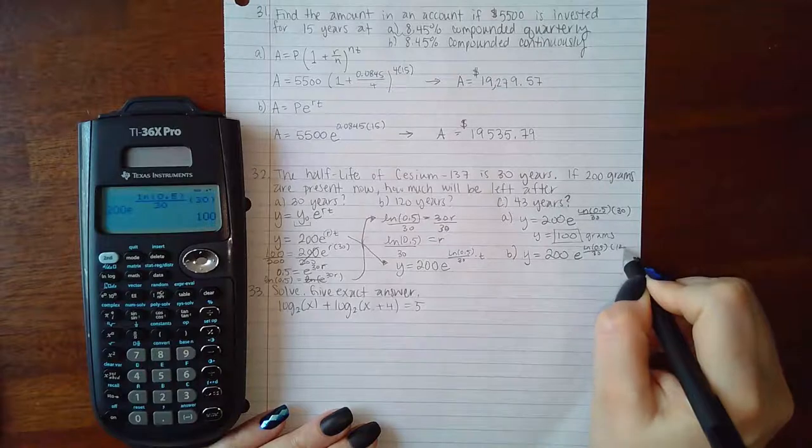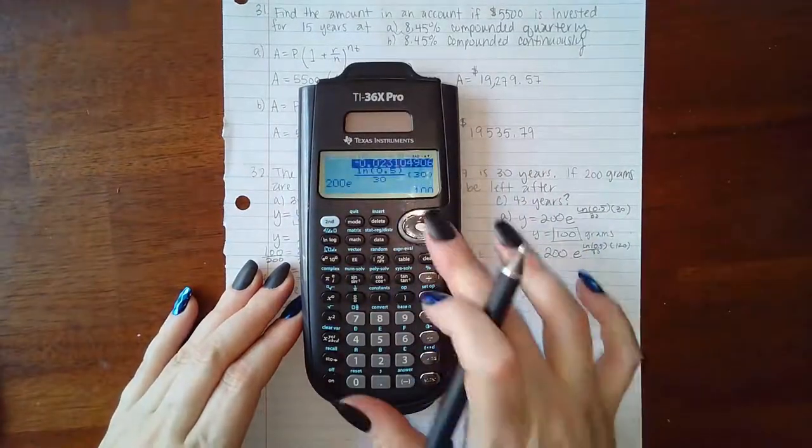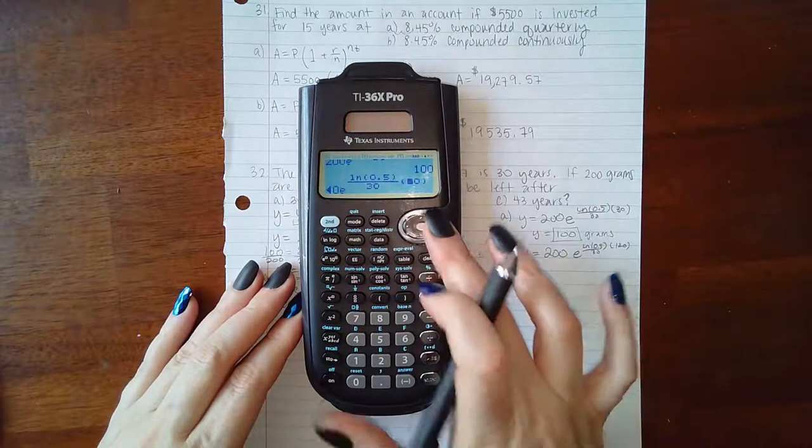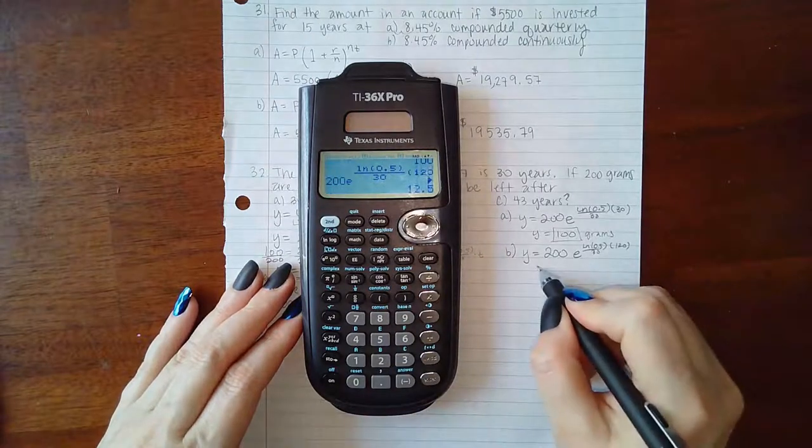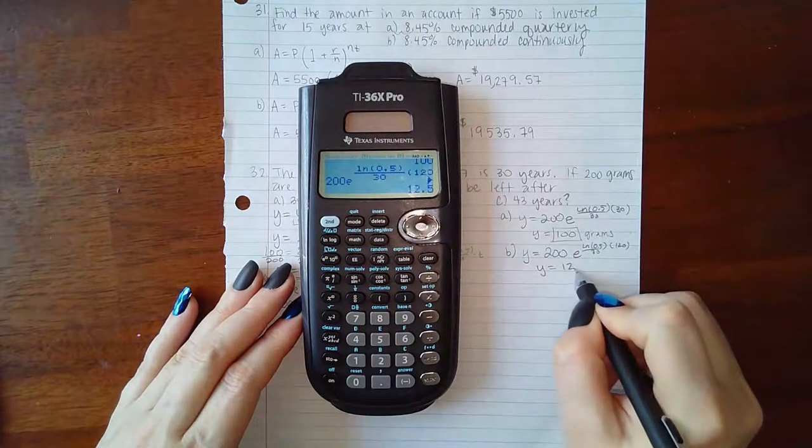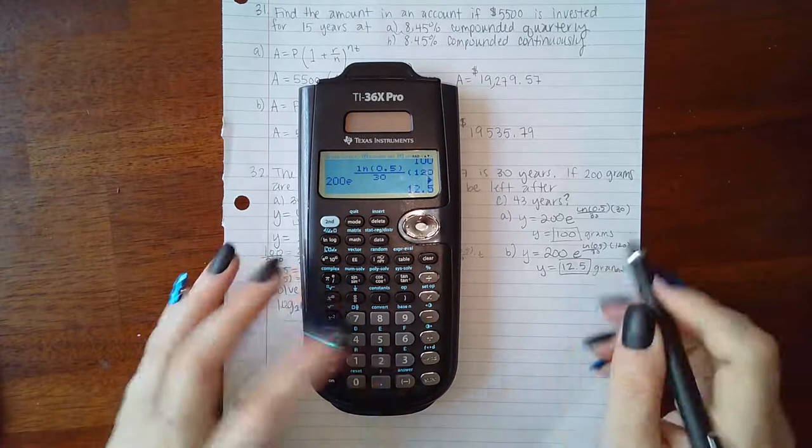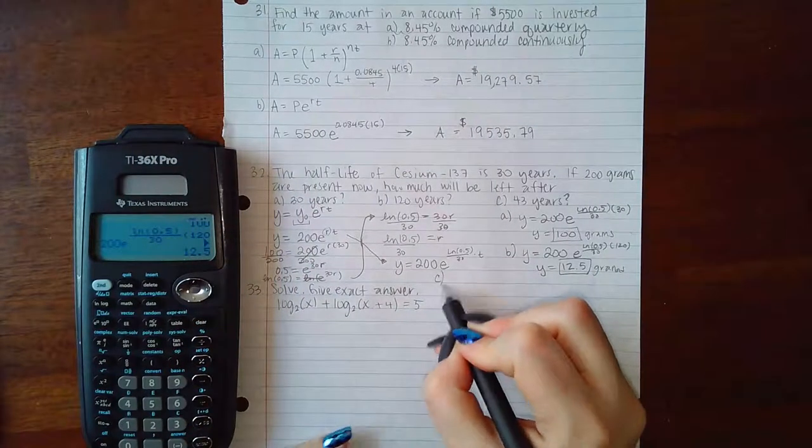For part B, they're asking me how much would be left after 120 years. So again, same formula, but now plugging in 120. I'm not going to busy myself with retyping that, I'm just going to highlight it, copy it, and change this to 120. Now we get that there would only be 12.5 grams after 120 years.